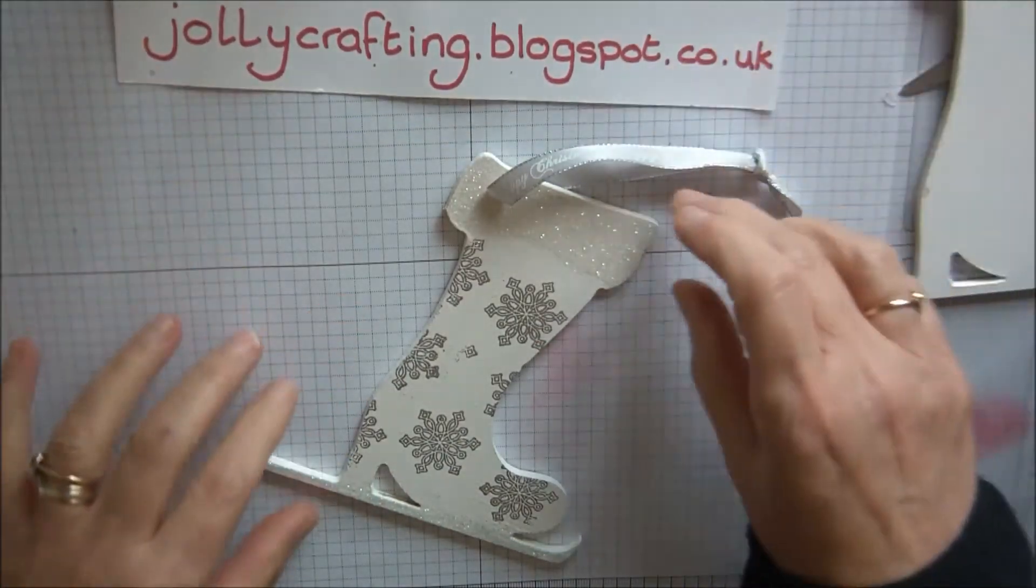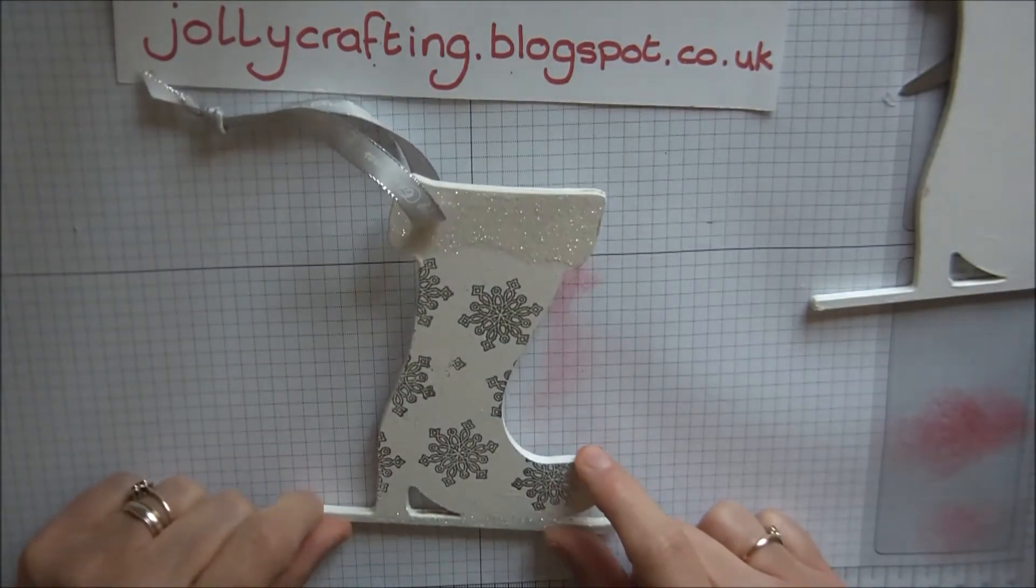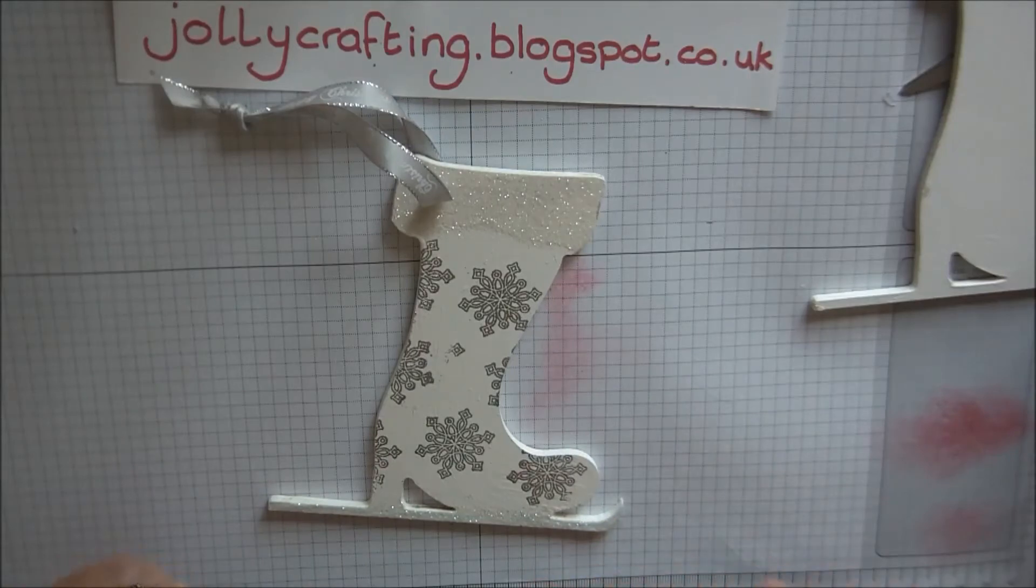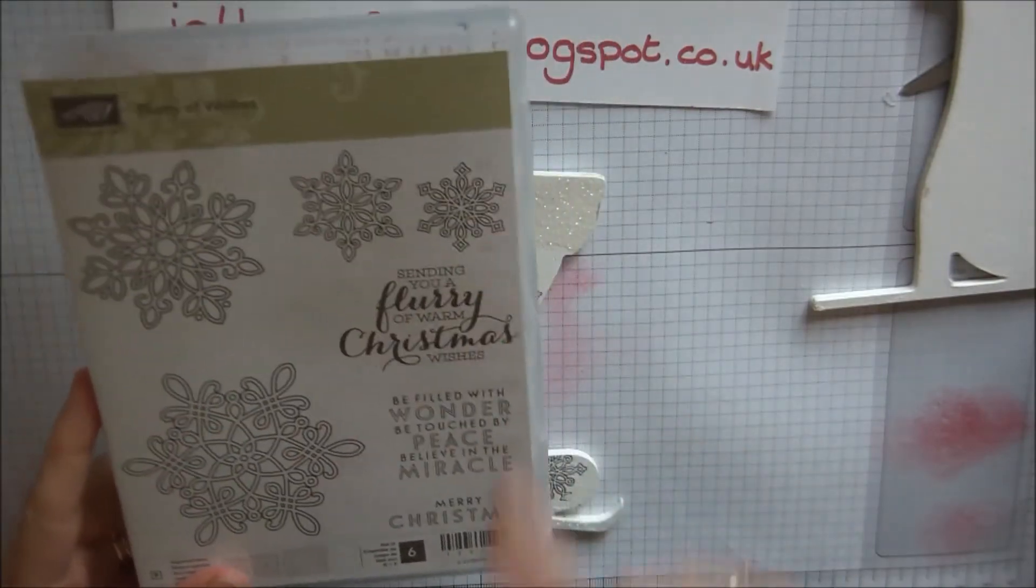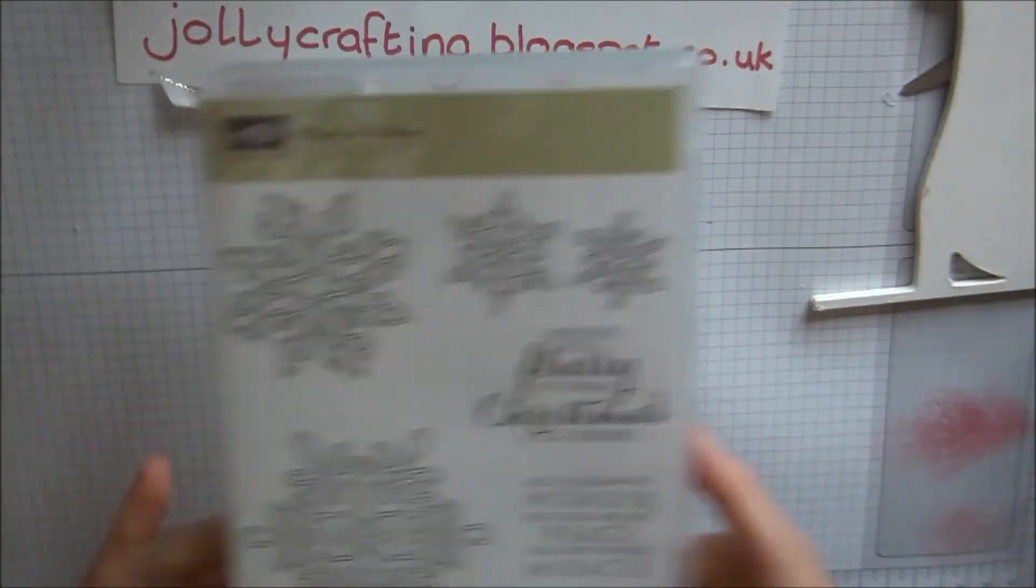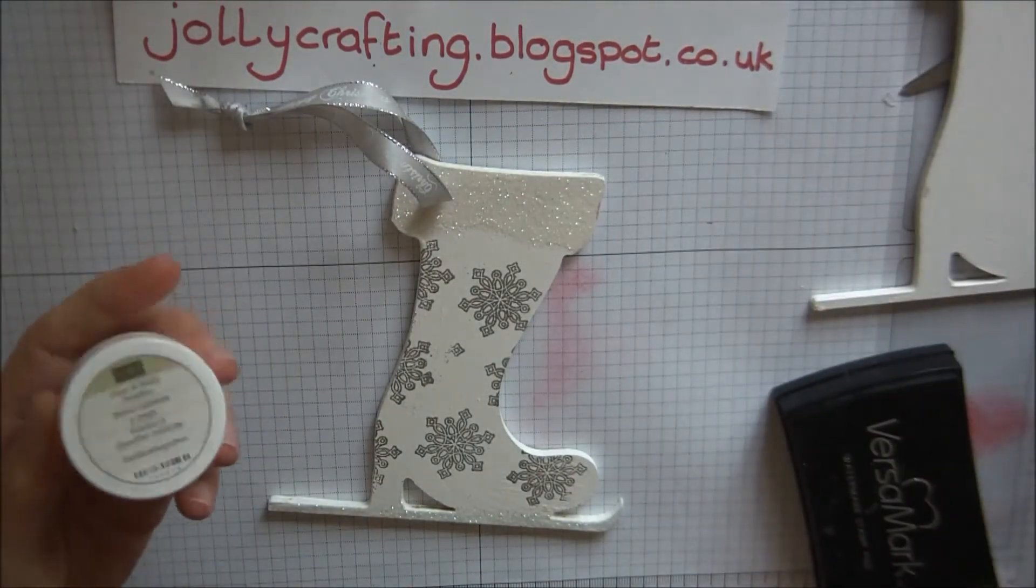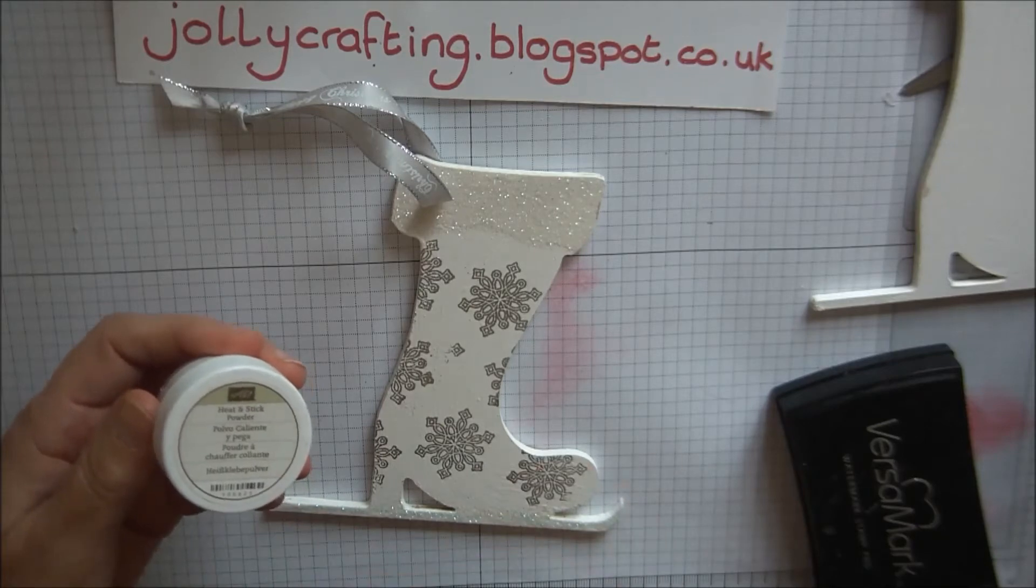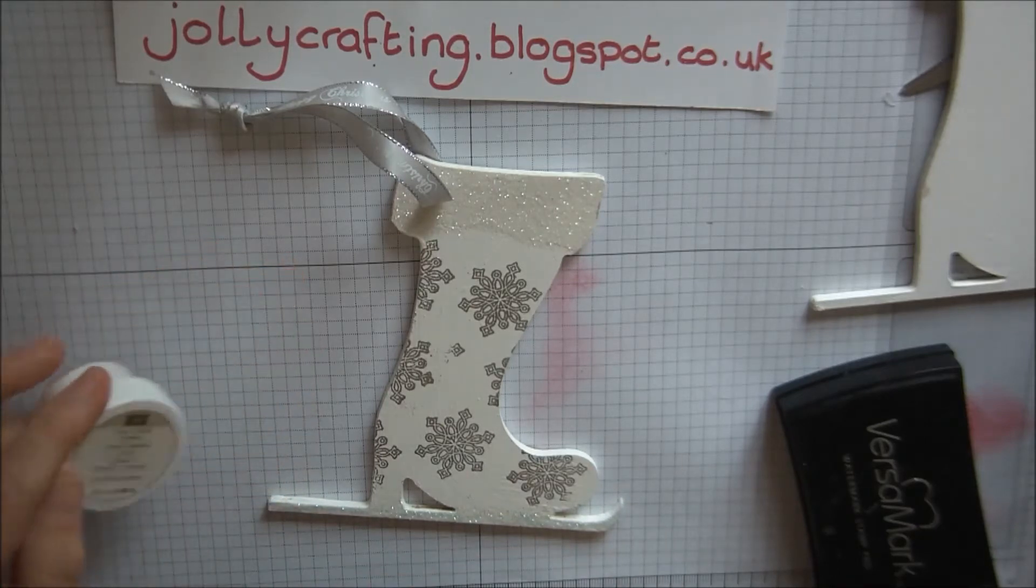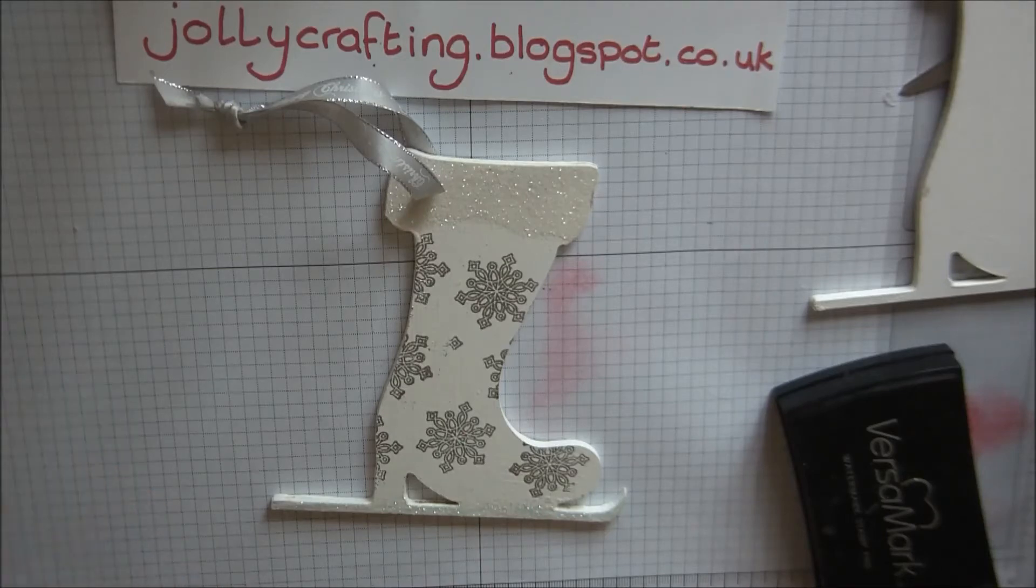Today we are making this beautiful little MDF ice skating boot. We're using a Flurry of Wishes stamp set, and we're going to be using this tiny little one here today. We're going to be using a lot of Versamark ink and Heat and Stick powder from Stampin' Up to make the glitter stick. Instead of doing this in silver, I'm going to do it in pink because I just want a different quirk on it.